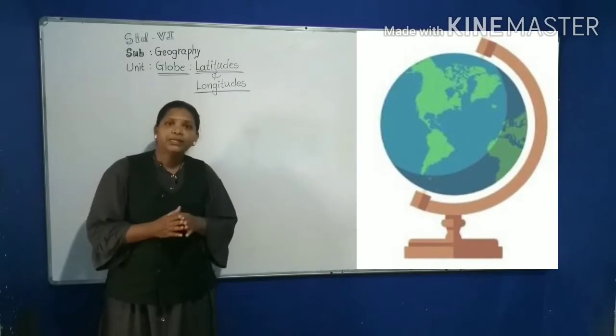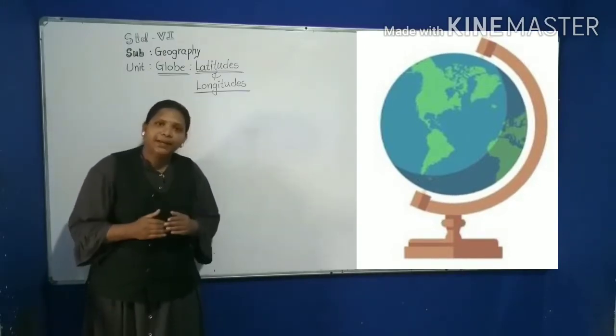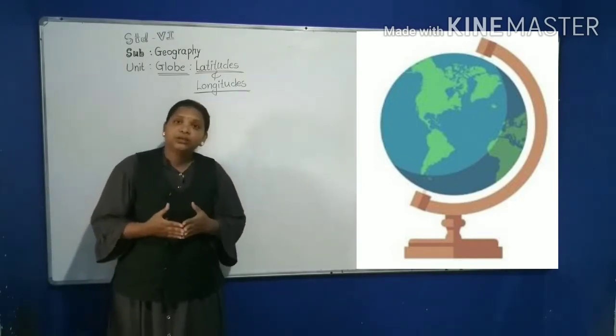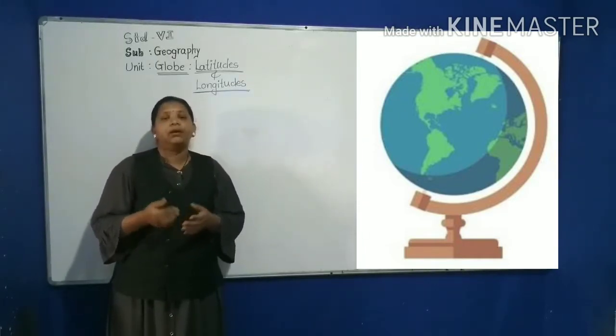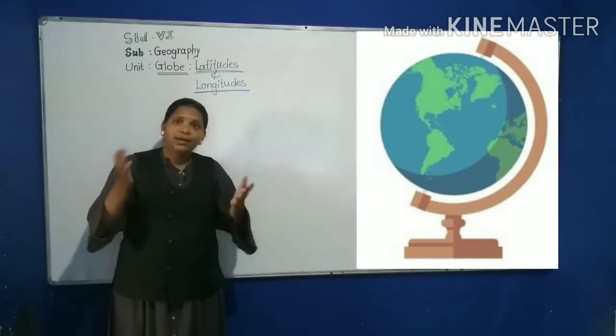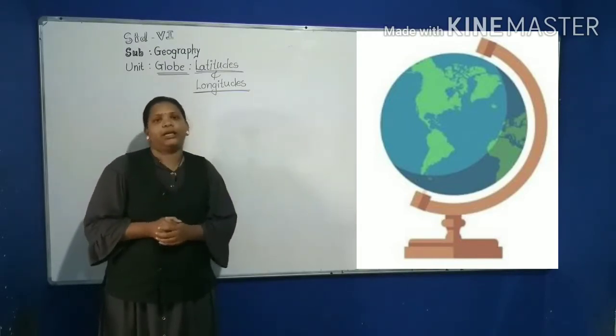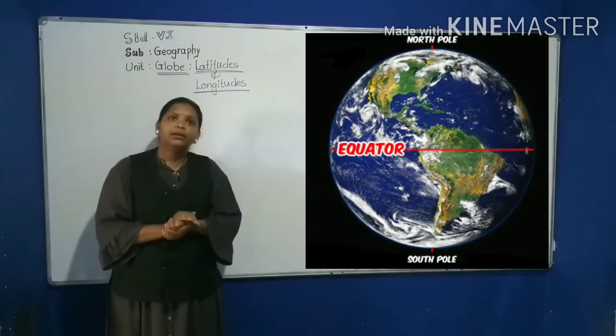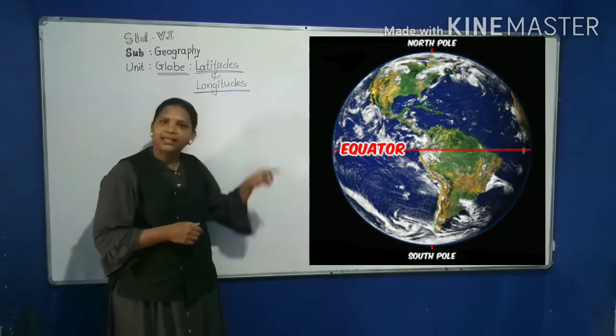The globe is a small model of the earth which represents the continents, oceans, countries, etc. Now, the question arises again, how to locate a place on it. The earth rotates or spins upon an imaginary axis.